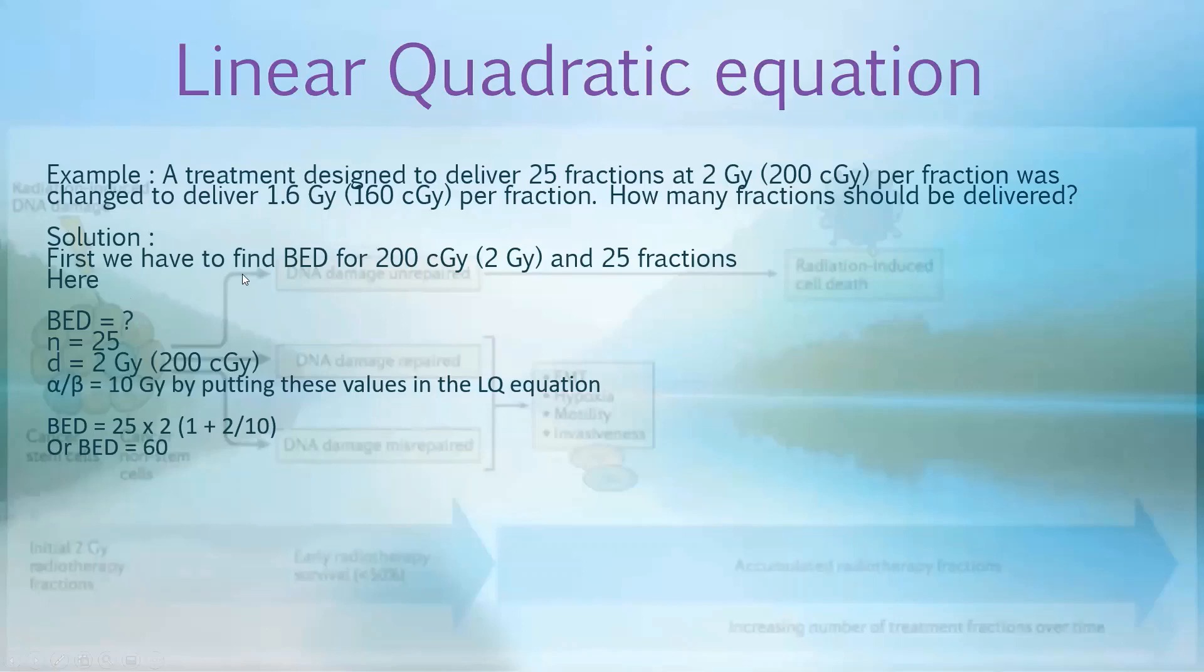First, we have to find BED for 200 centigrade. Our number of fractions are 25 and dose per fraction is 200 centigrade. Alpha beta for tumors will be 10, and the unit for alpha beta is gray because it's dose. BED will be 25 times 2 into 1 plus 2 by 10, this is alpha beta. This is the daily dose. We get a BED of 60 for 200 centigrade per fraction.